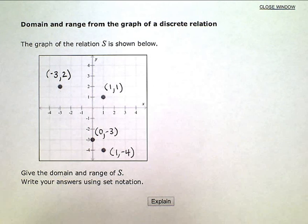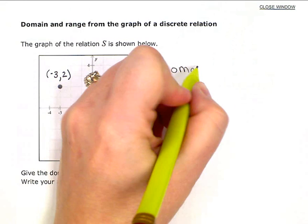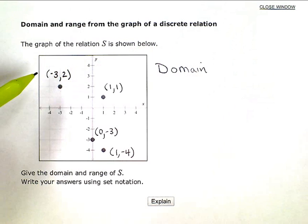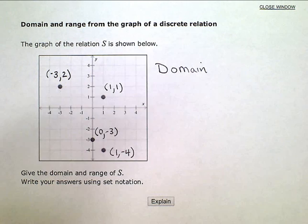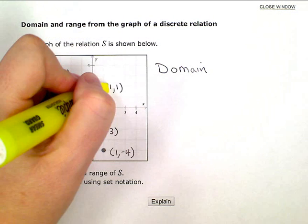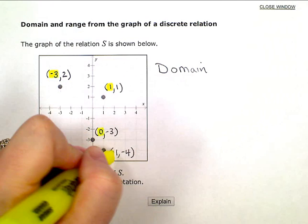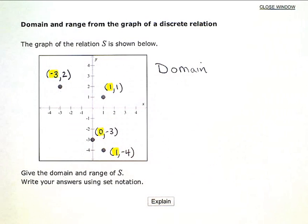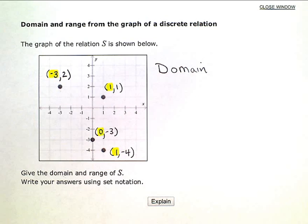So my domain are the list of the X values. So in other words, my domain includes negative 3, 1, 0, and this one is also 1. Now since 1 is repeated here, I only have to list it once when I do my set.